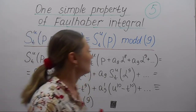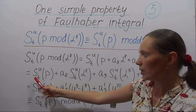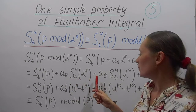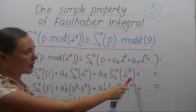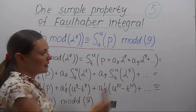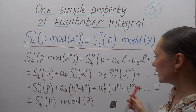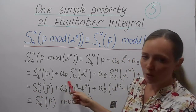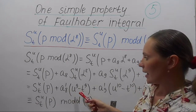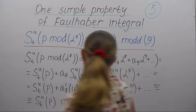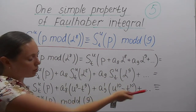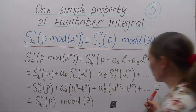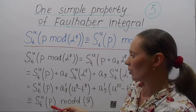Using the linearity property of the integral, we get the integral of the poly number P plus some coefficient times the integral of α to the 8, plus some coefficient times the integral of α to the 9, and so on — where the powers of the α terms are larger than 9. By definition, this is congruent to the integral of the poly number P mod d9.